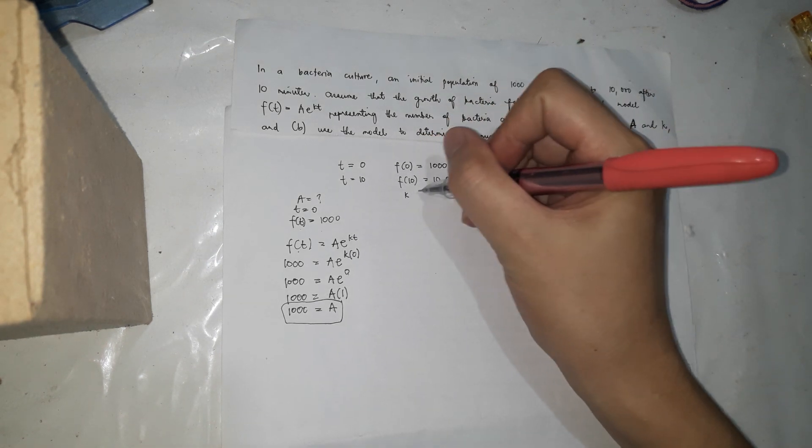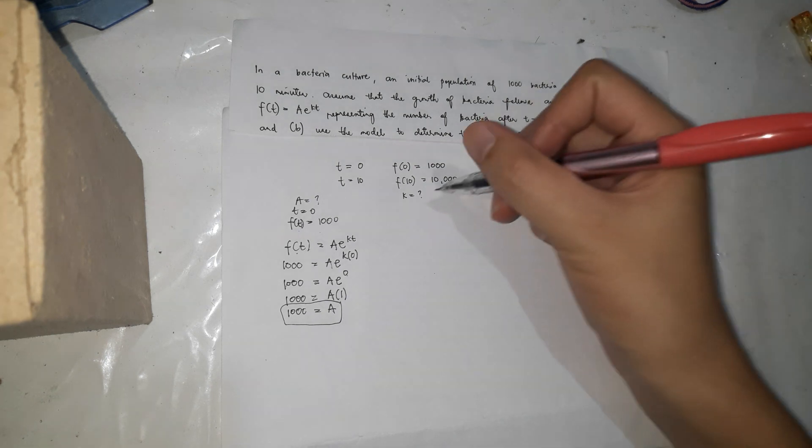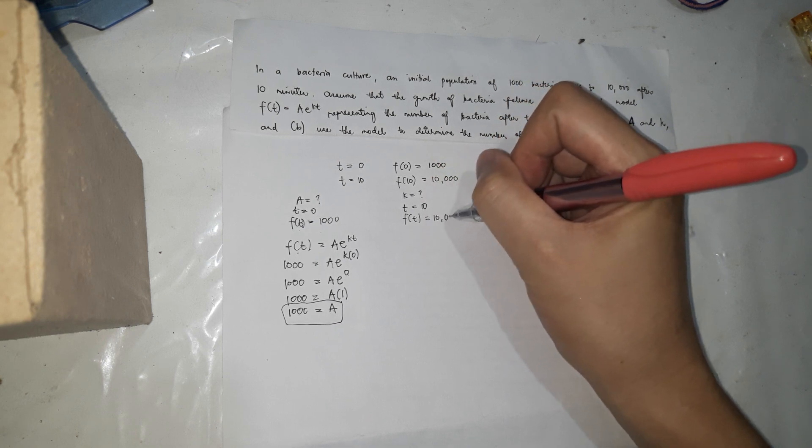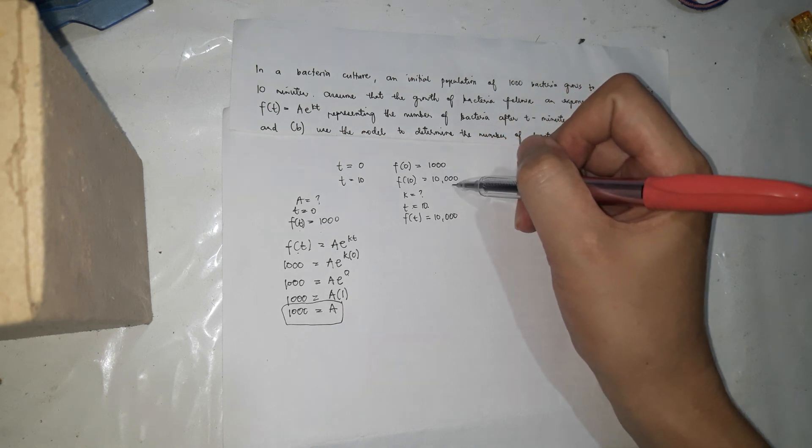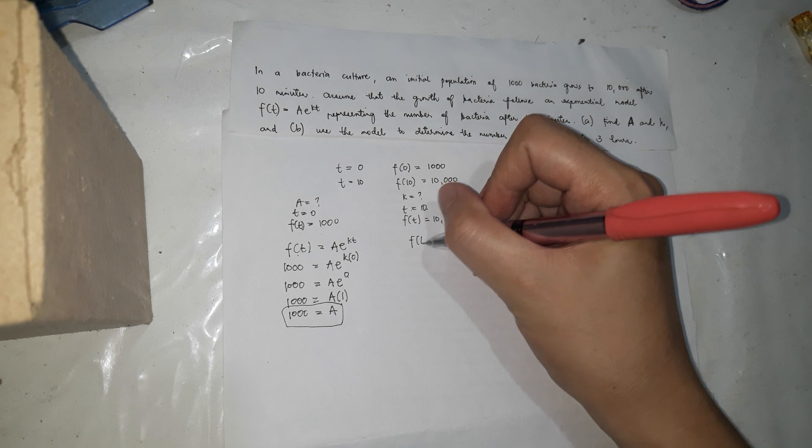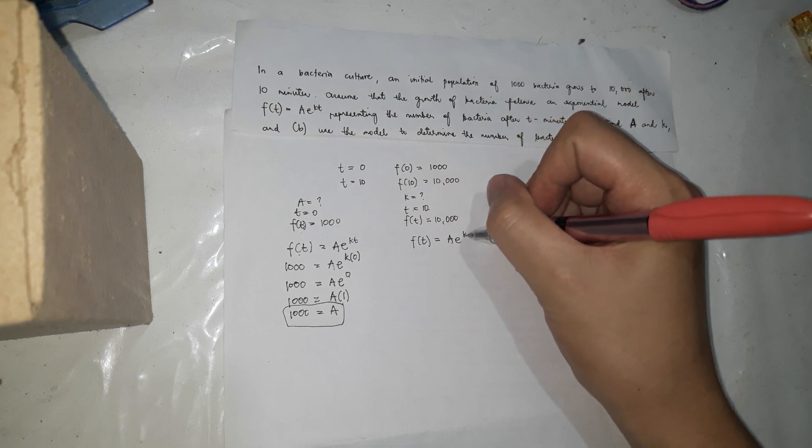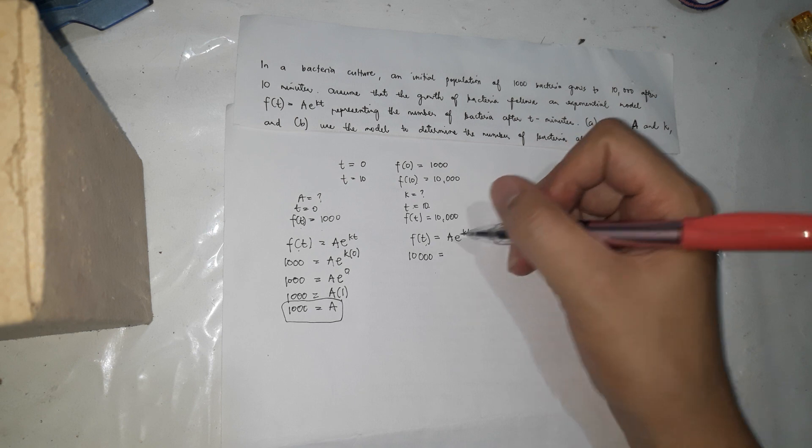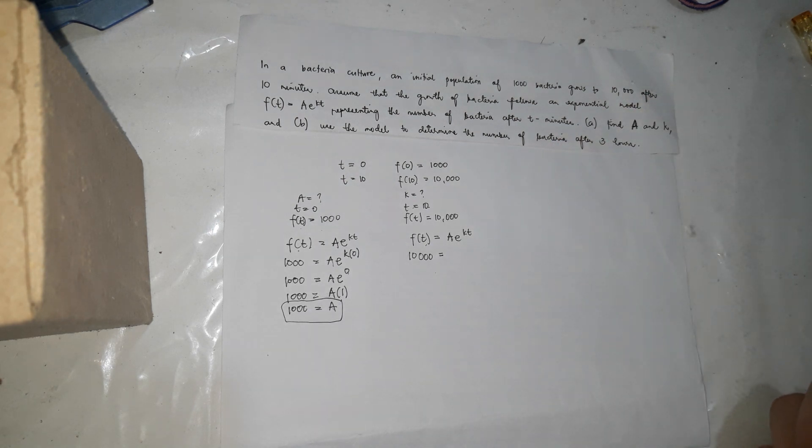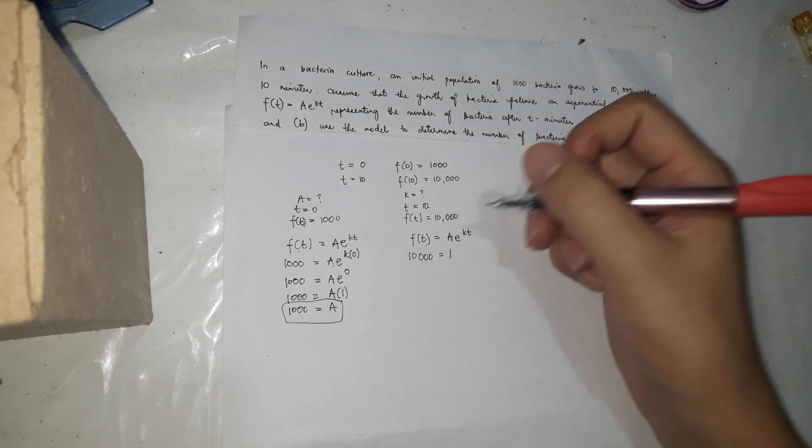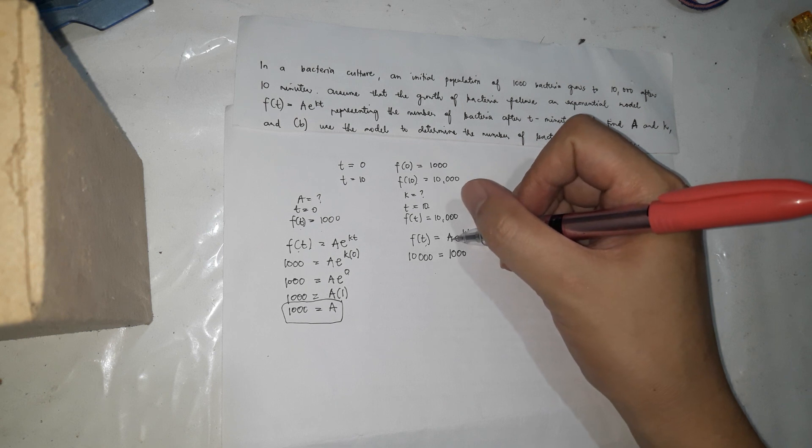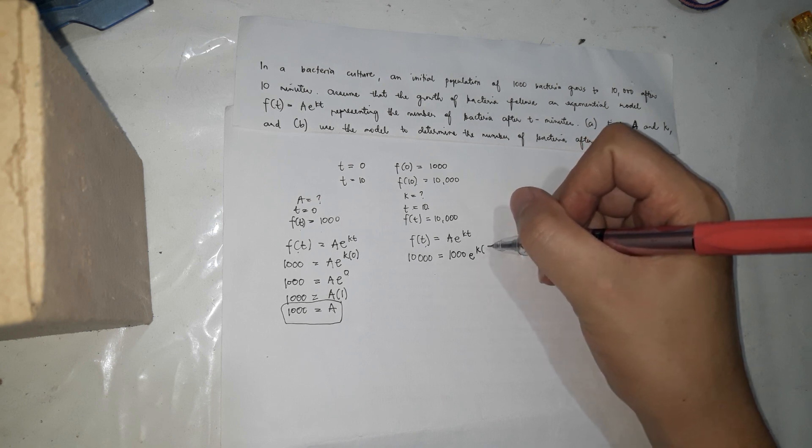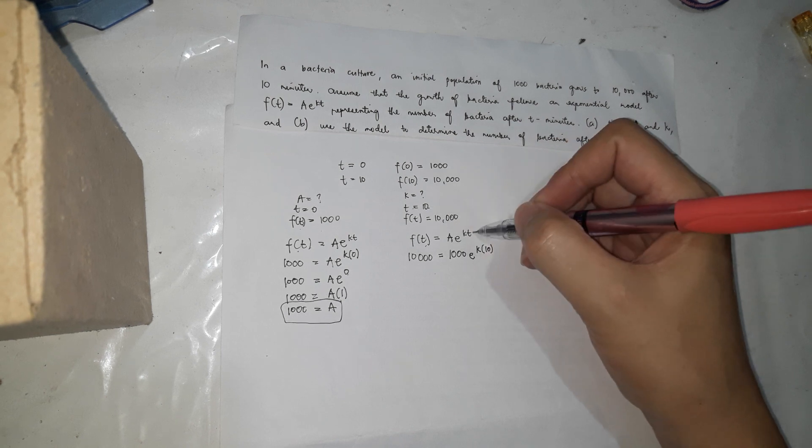We're going to solve now for k. What's the value of k? We're going to use t equals 10, f(t) equals 10,000. When t is 10, f(10) equals 10,000. So f(t) equals a times e to the kt. So f(t) is 10,000 equals a. The value of a is 1,000. Where did we get that? Here. So a equals 1,000, e to the power of k, what's the time? That's 10, after 10 minutes. So t equals 10.